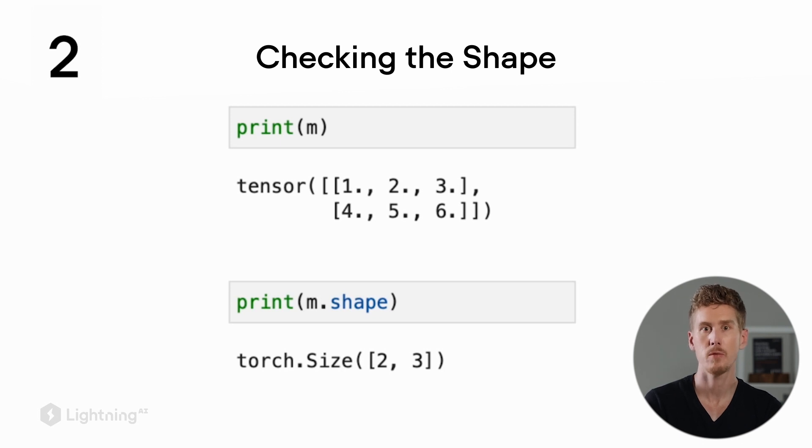If we want to derive the rank of a tensor from .shape, we count the number of values returned. In this case, two numbers are returned: 2 and 3. So this is a rank-2 tensor, or a matrix.